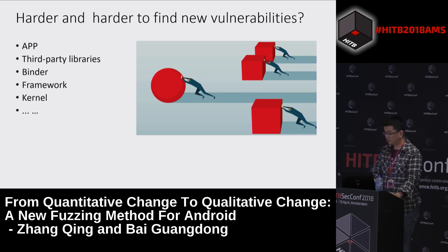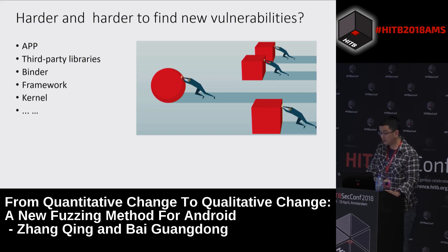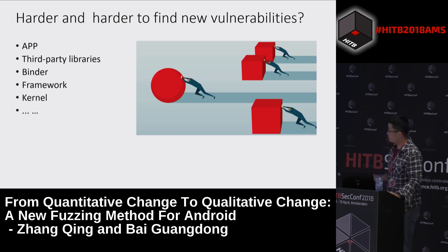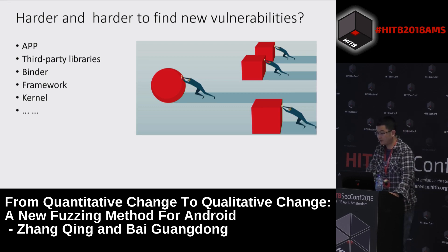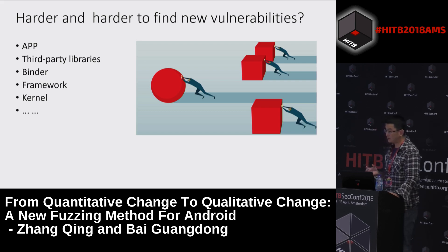Here I list some targets of vulnerability identification on Android that most security researchers focus on. You can see from user space to kernel space. At the beginning, research was focused on user space, but nowadays more and more research moves attention to kernel space, and it has become harder and harder to find new vulnerabilities.